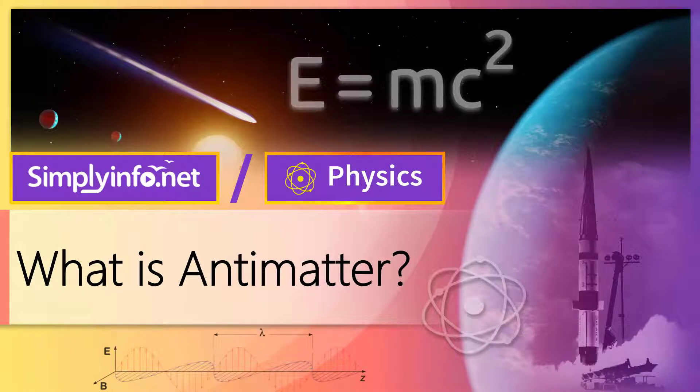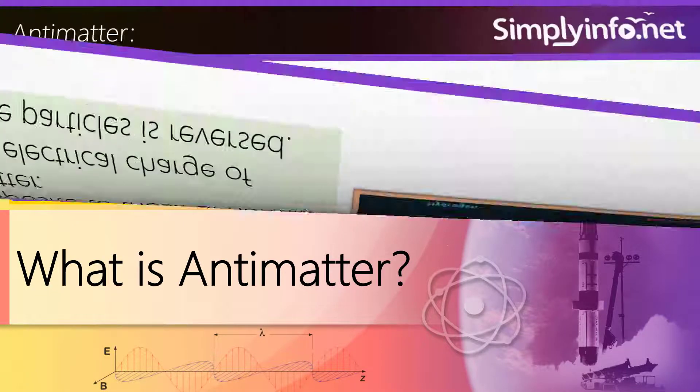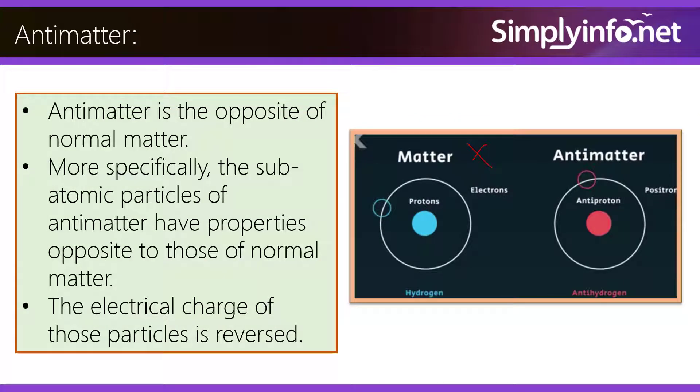What is antimatter? Antimatter is the opposite of normal matter. More specifically, the subatomic particles of antimatter have properties opposite to those of normal matter. The electrical charge of those particles is reversed.